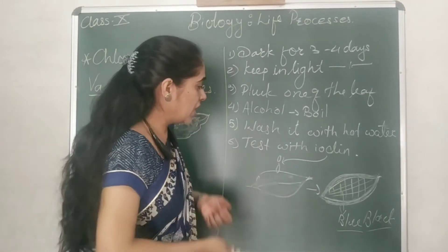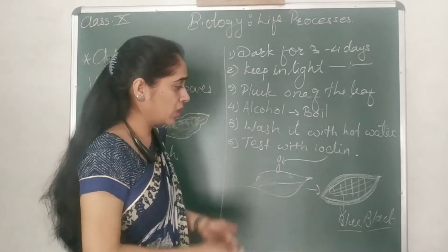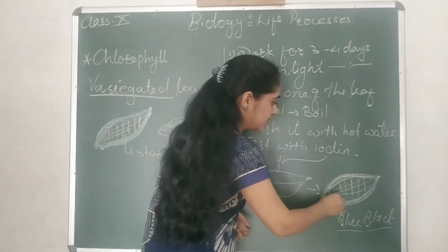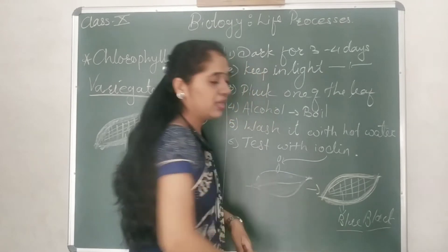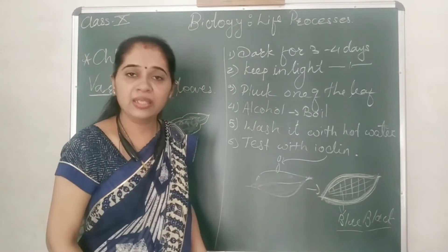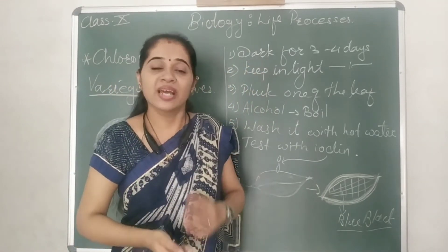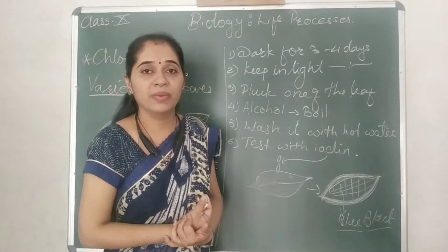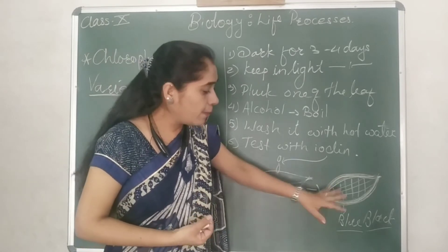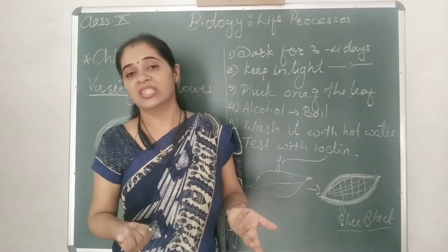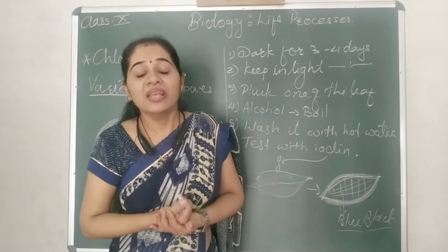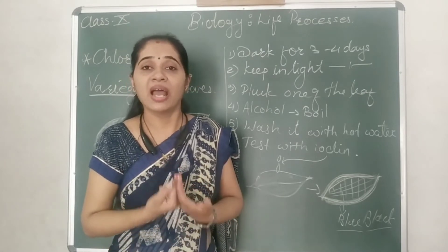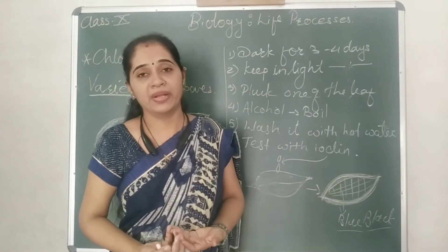The rest of the part — however small or large — wherever chlorophyll pigment was not present, it was white. That is why we selected variegated leaves for this experiment. That white part does not participate in photosynthesis because it doesn't have chlorophyll pigments.